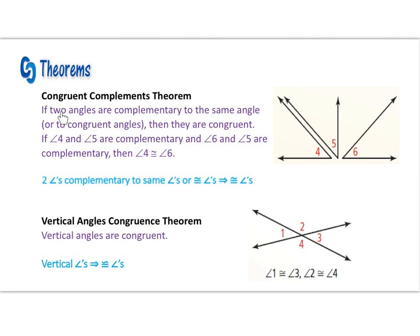Similarly, we have our congruent complements theorem. It states if two angles are complementary to the same angle, or to congruent angles, then they are congruent. In our diagram, if angle 4 and angle 5 are complementary — they add up to 90 degrees — and angle 6 and angle 5 are complementary, then we conclude angle 4 is congruent to angle 6. Take a moment to write down your implied statements as you watch.